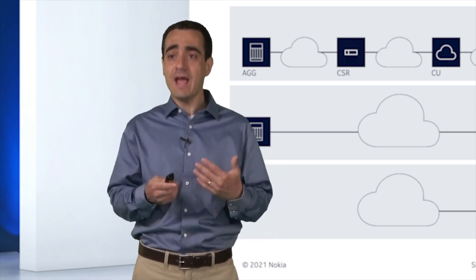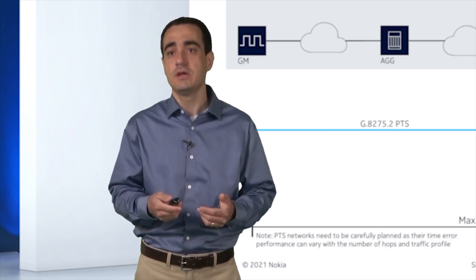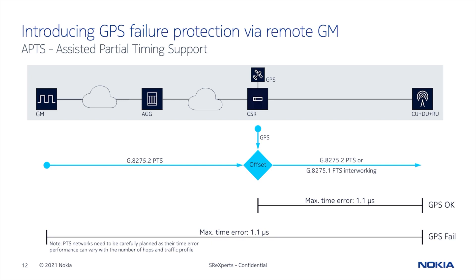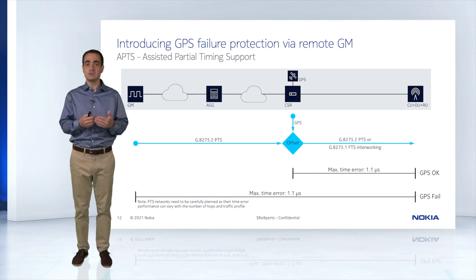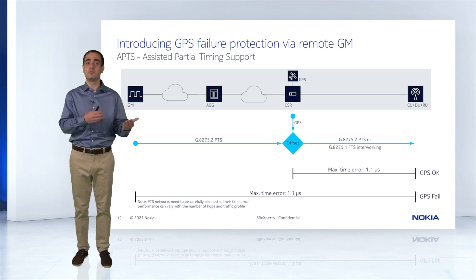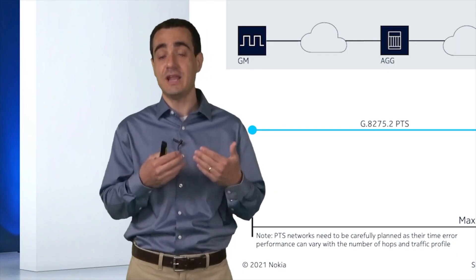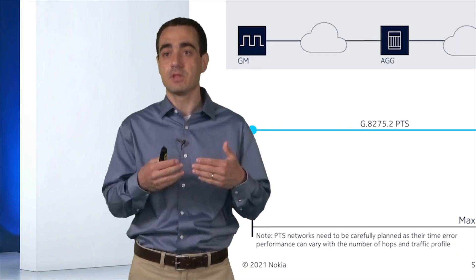What happens if we have a timing-unaware network? If we're using a third party to connect to our cell site and that third party doesn't provide timing capabilities, we have a timing-unaware network. In that case, when traversing a timing-unaware network, we need another standard: PTS, or Partial Timing Support, outlined by G8275.2. Because the nodes in between don't support timing, it provides less accuracy — worse performance compared to a Full Timing Support network — and we have strict network limits to make sure we can make it work.